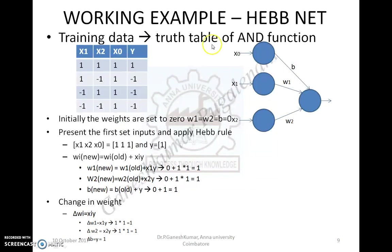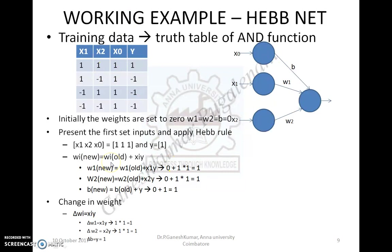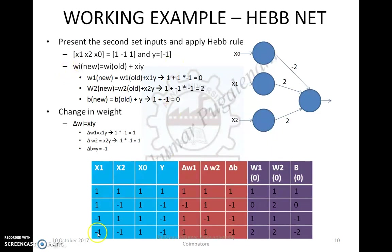Here is an example of the Hebb net — the AND function realized using the Hebb net. Since it is popular for bipolar data, the data taken here is bipolar with some bias, meaning instead of 0 you use -1. For such a network, when training using the Hebb network, you design the initial weight values, calculate the net input, apply the activation function to produce the output, and for every set of inputs you calculate the new weight using the old weight plus x_i * y. For each set of inputs, you update the weight values, and finally arrive at a set of final weight values used in the neural network to produce the response.